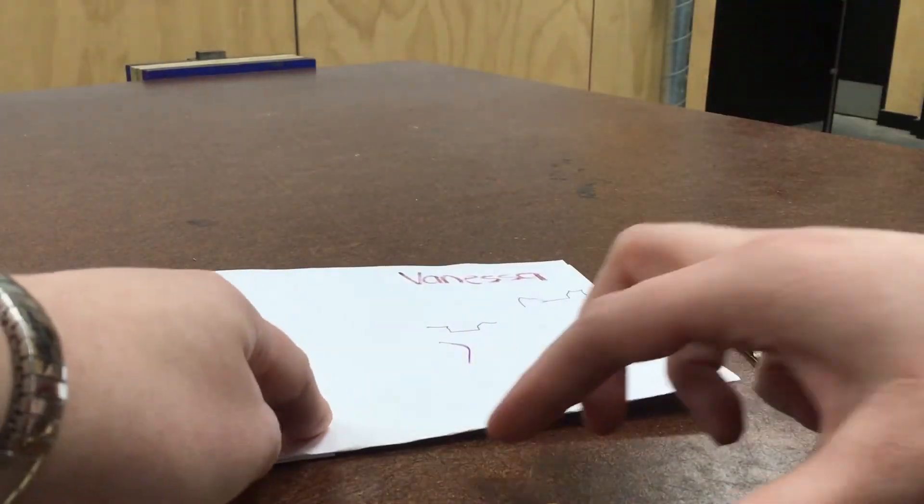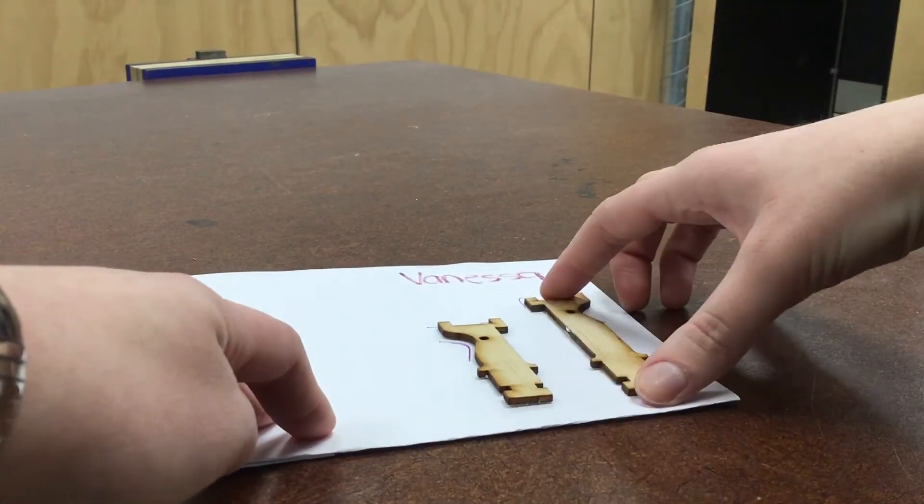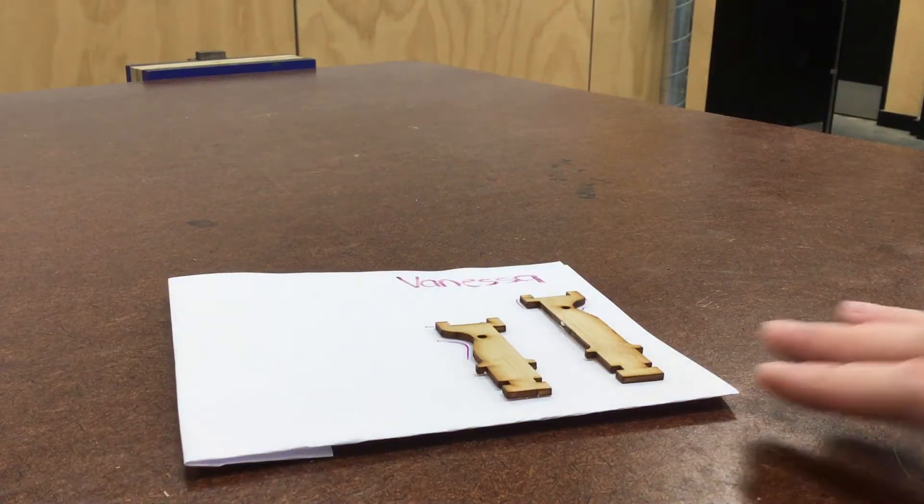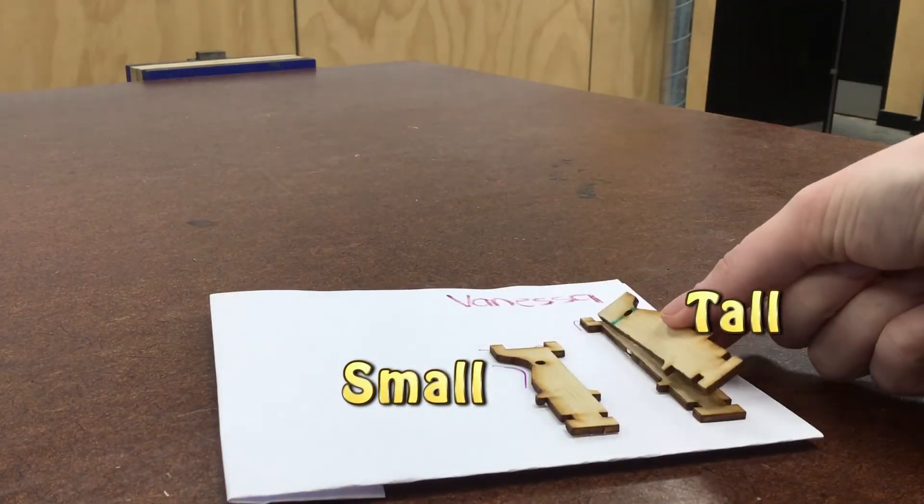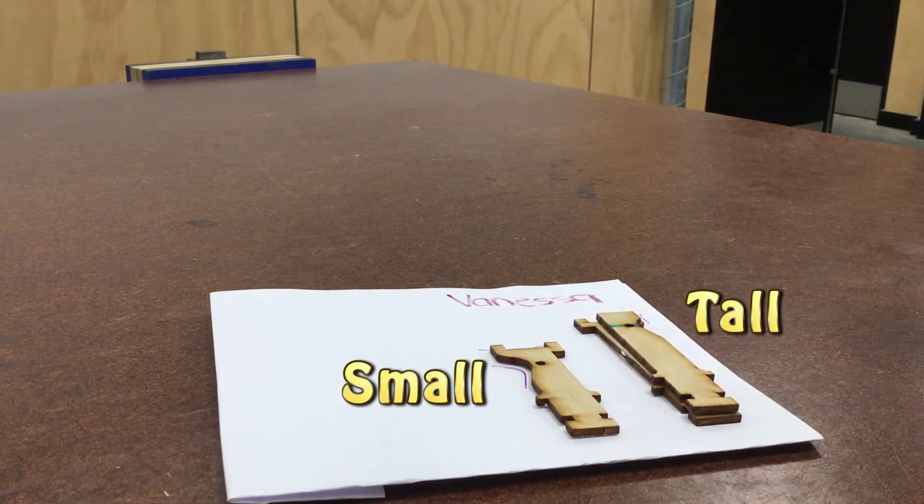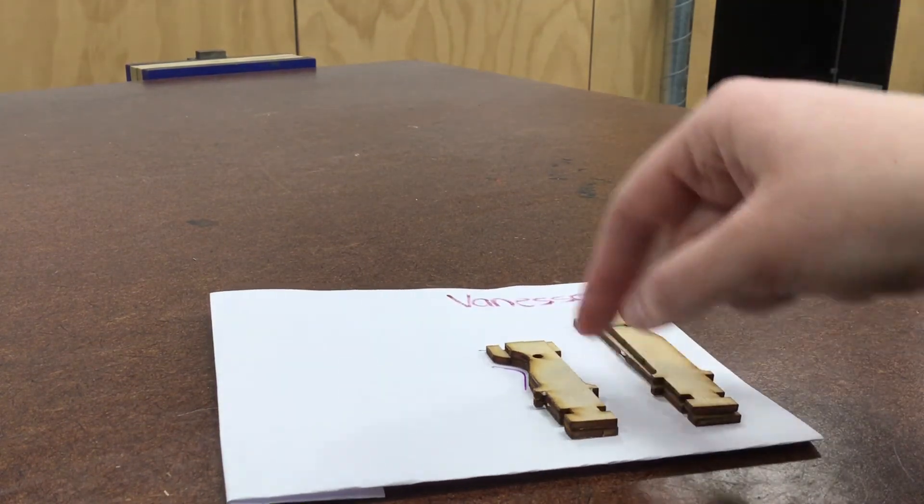Then what you need to do is place or glue this piece on top so it matches the side where the curve is. When they're glued together they will look like that.